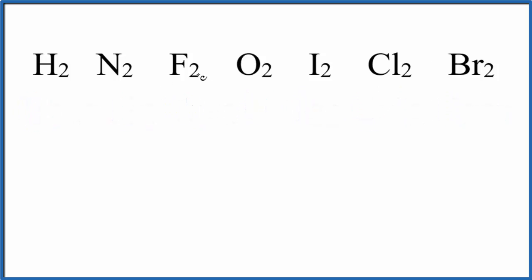Of these seven here, fluorine, iodine, chlorine, and bromine, they're all in the same group, so these Lewis structures will be the same way.